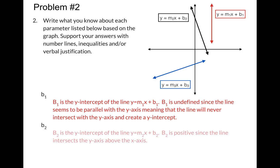b2 is where that black line, the y equals m2x plus b2, crosses the y-axis, and it's positive because it intersects above the x-axis, so that must be positive.